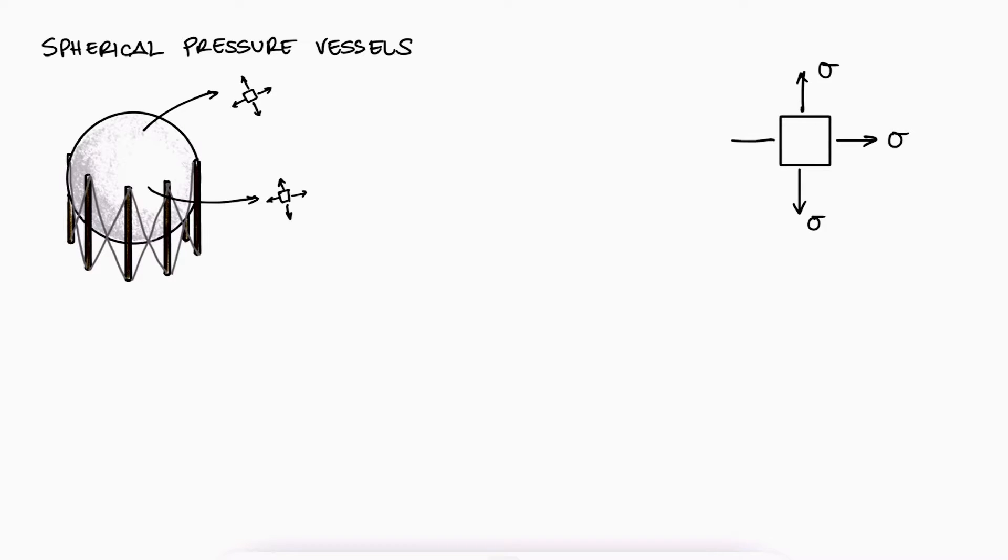Now if we look at a spherical pressure vessel, we see that the stress element at any location of the surface will be the same. It will be subjected to two tangential, orthogonal stresses sigma.